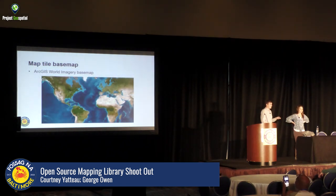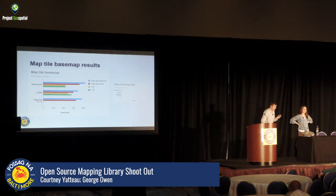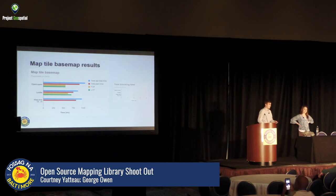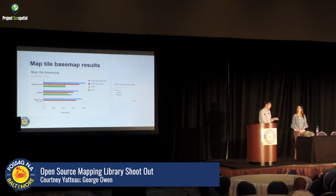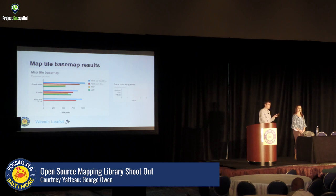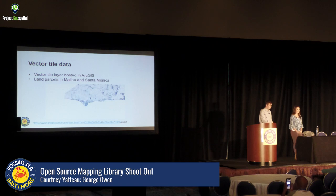Next up, map tiles — raster tile satellite imagery loaded in all three libraries. The results are even closer here. Notably, all vector tile base map times were between one and two seconds, but everything here is a second or less — so it's about twice as fast to load raster tiles versus vector tiles. All three are pretty performant, and Leaflet actually takes this one. Total blocking time is zero for all libraries, meaning as soon as you can see the map you can click, drag, and zoom.